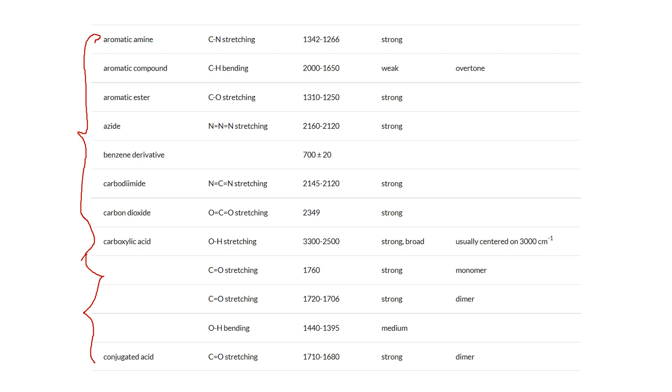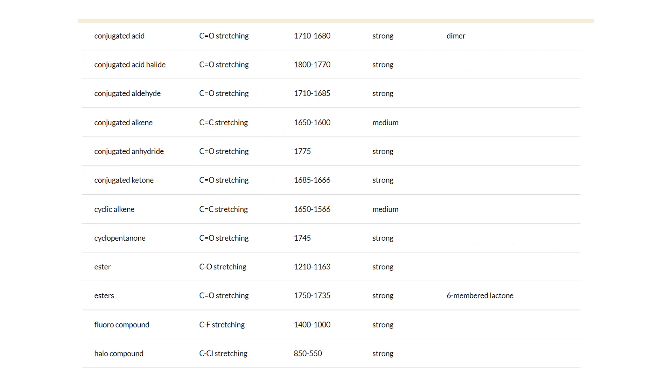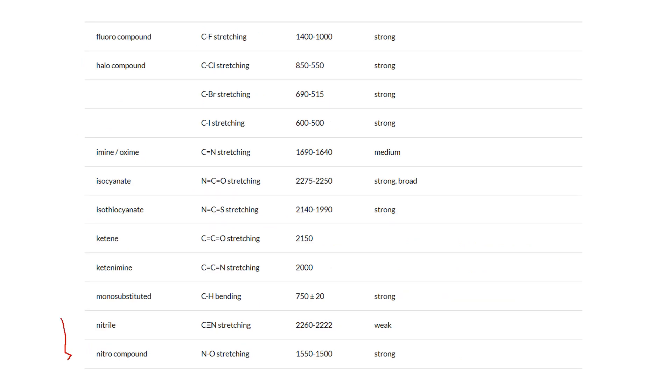If C-H stretching range is given as 1648 to 1638, you need to remember the range. Remember the lower limit is 1638 and upper limit is 1678. You don't need to read everything - just memorize the ranges. Carboxylic acids, carbon dioxide, carbodiimide, azide, aromatic compounds, CN stretching, conjugated acids, fluorocompounds are all listed.